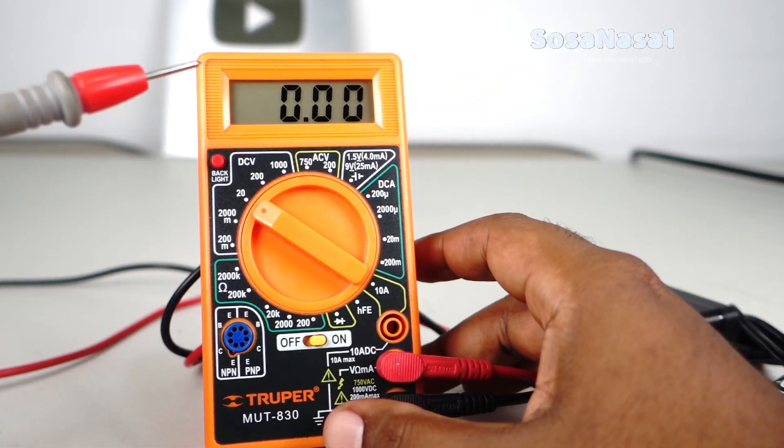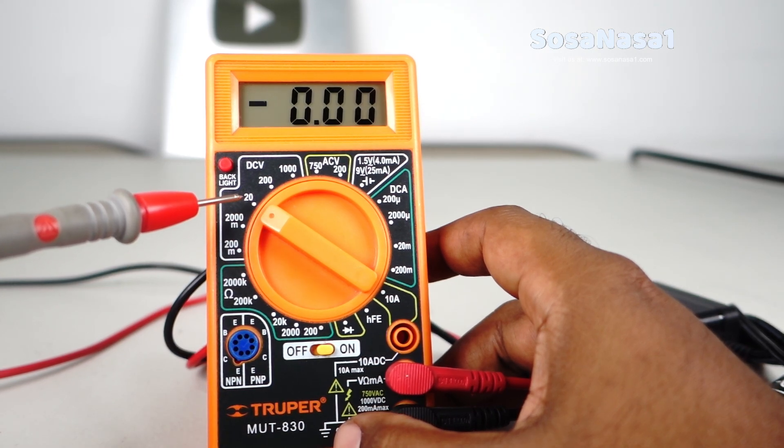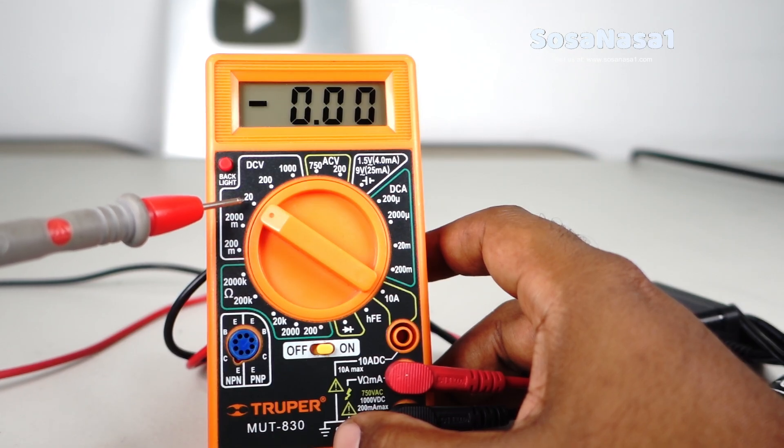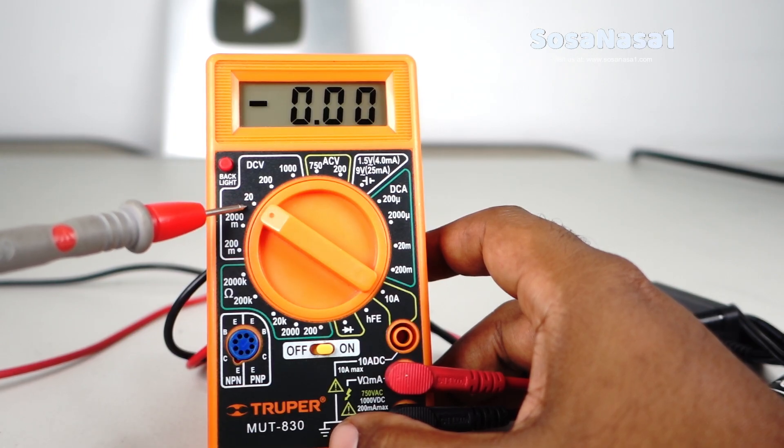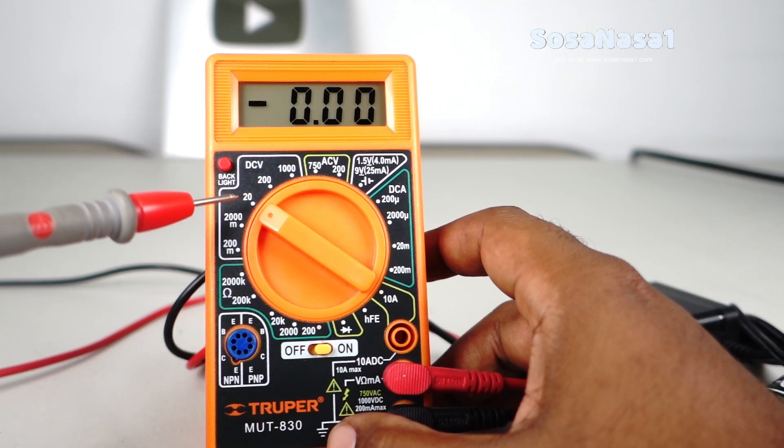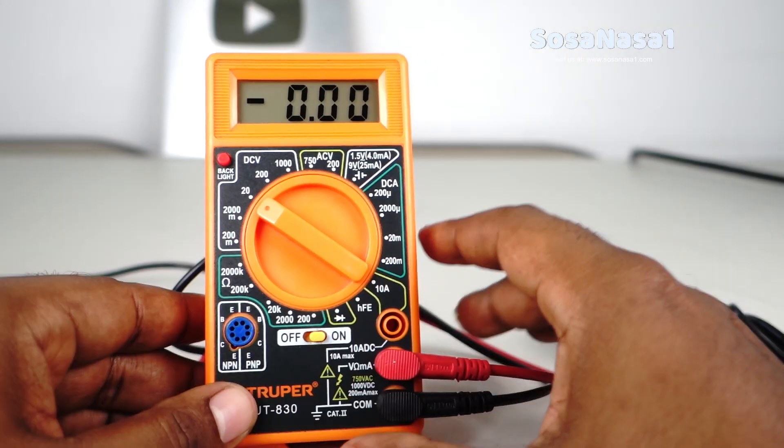In this case, I choose 20 volts because 20 volts is higher than 12 volts. This means in this lever, this digital multimeter can measure 12 volts, 15 volts, 16 volts, and other volts below 20 volts. Now our digital multimeter is ready.